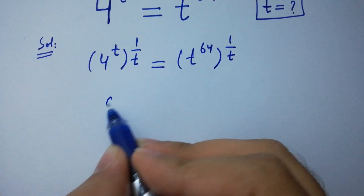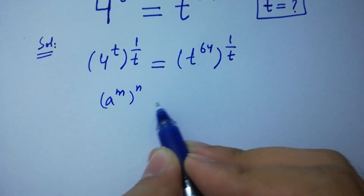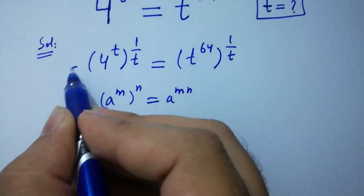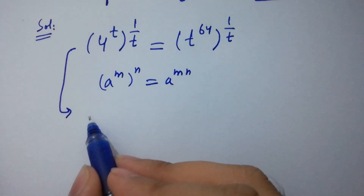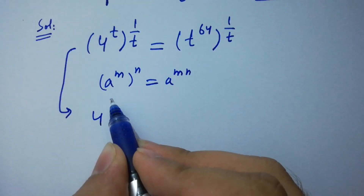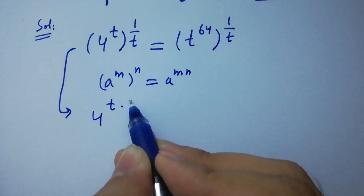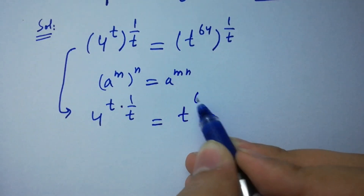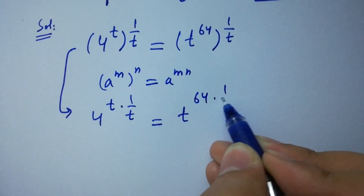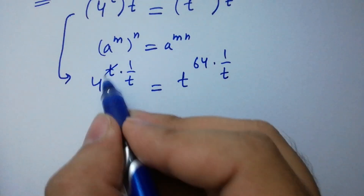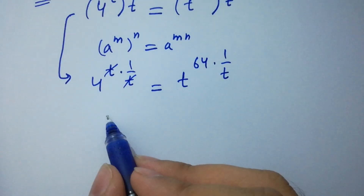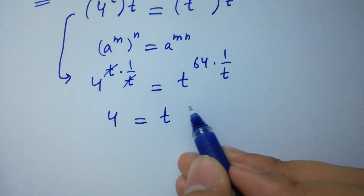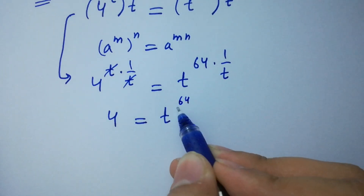As we know, a to the power m, to the whole power n, equals a to the power mn. Applying this, we get 4 to the power t times 1 over t equals t to the power 64 times 1 over t. Here t and t cancel, giving us 4 equals t to the power 64 over t.